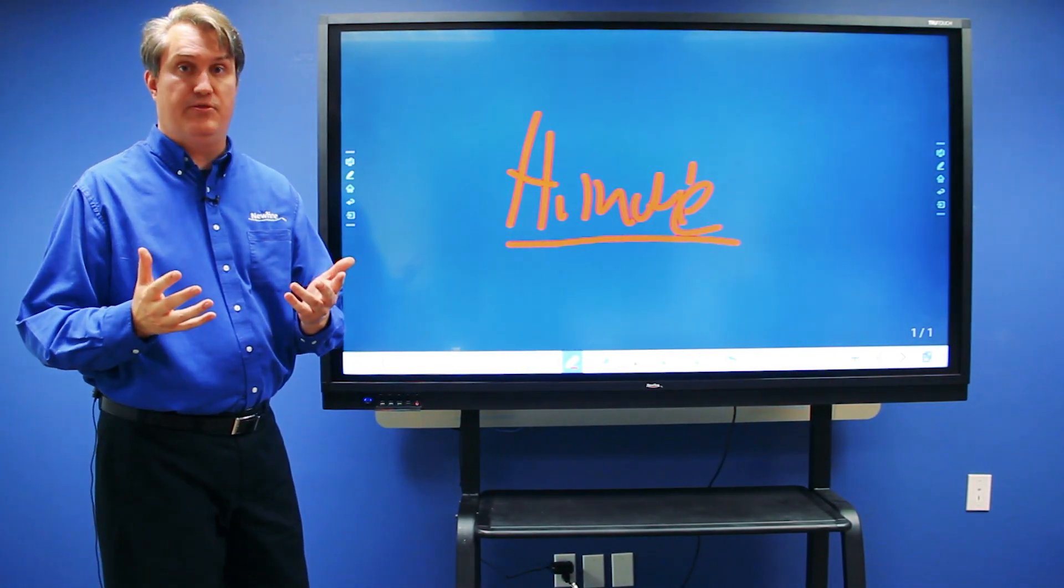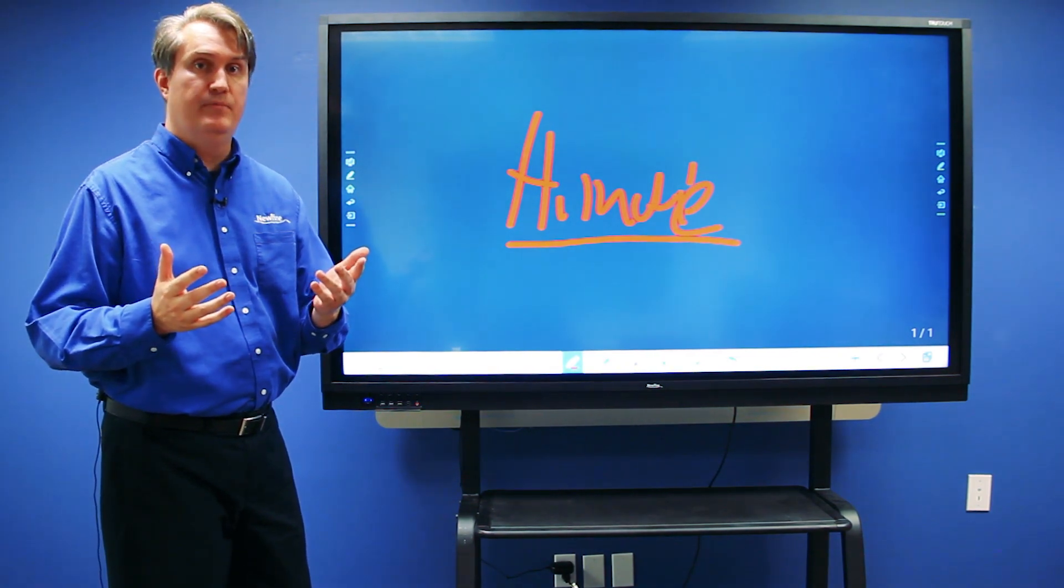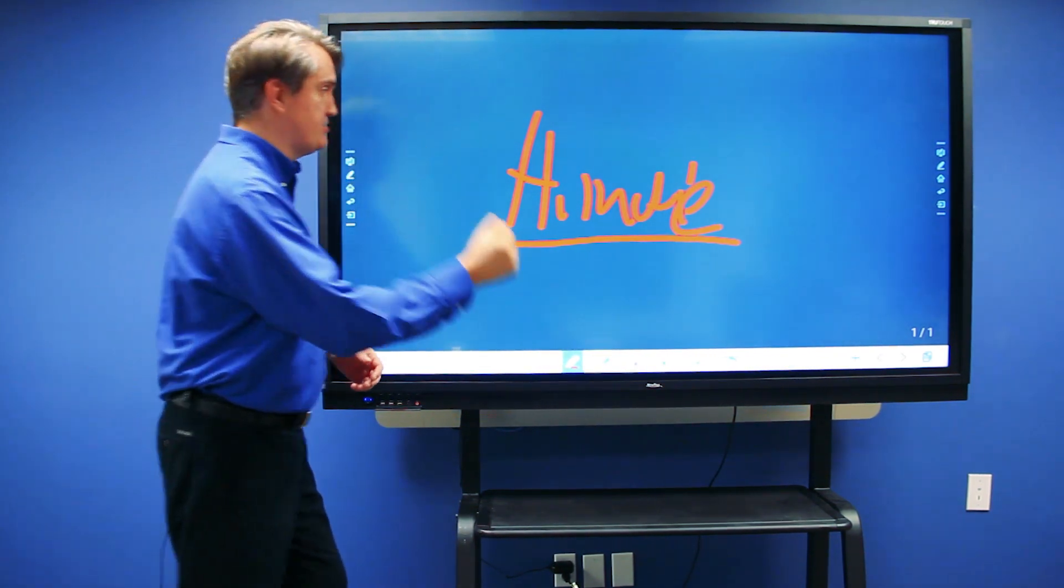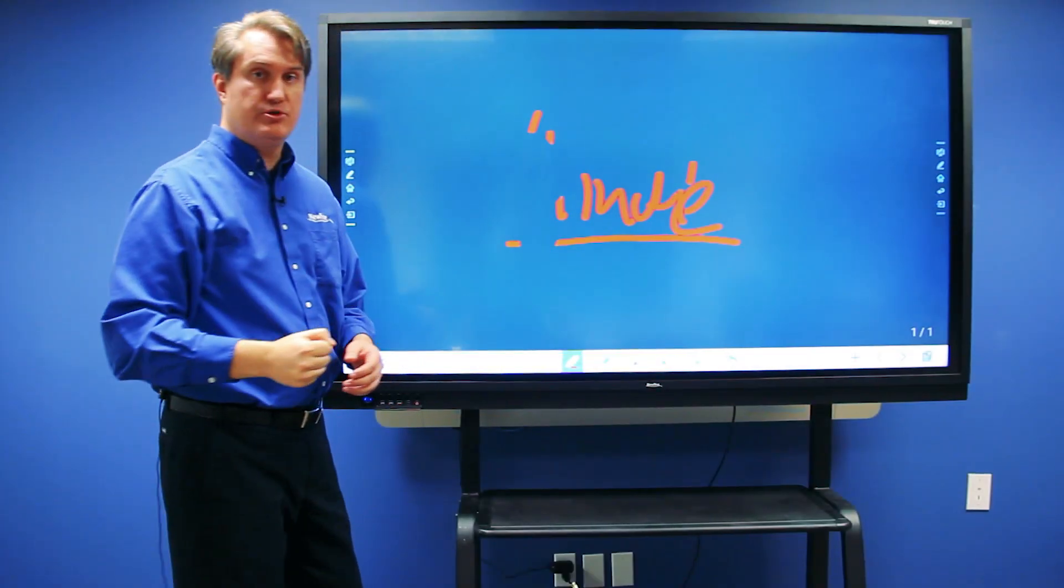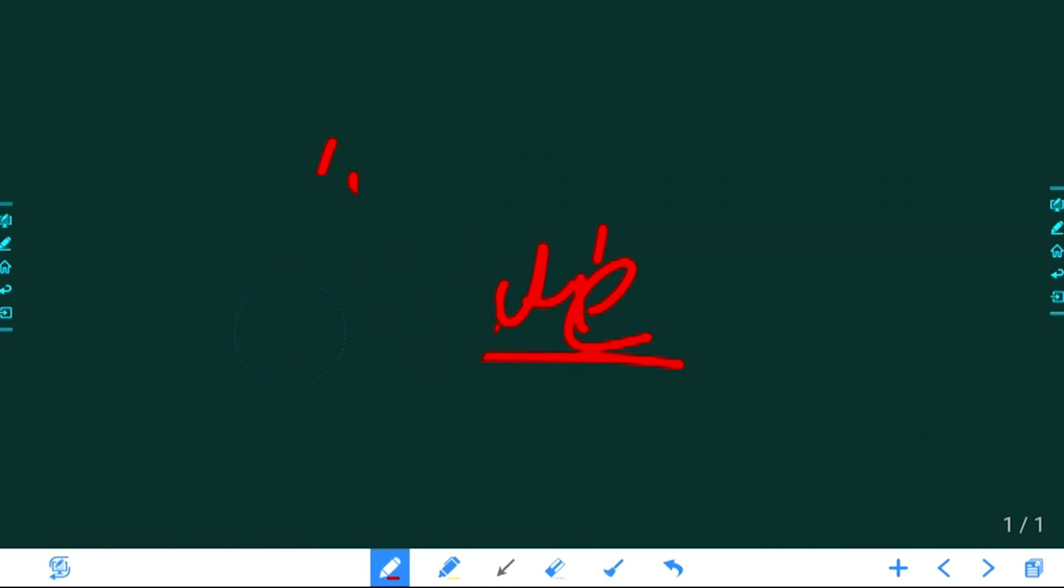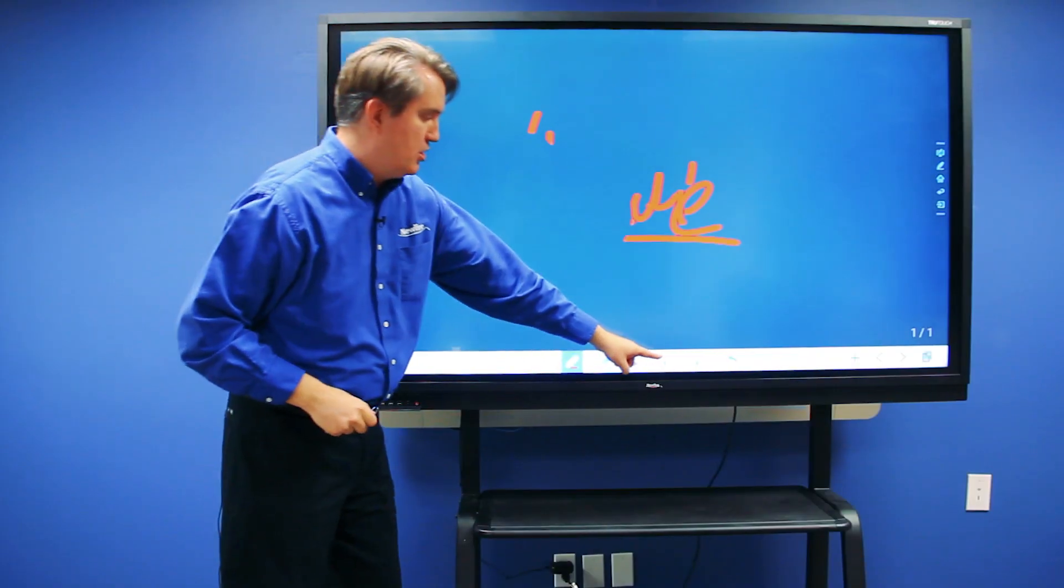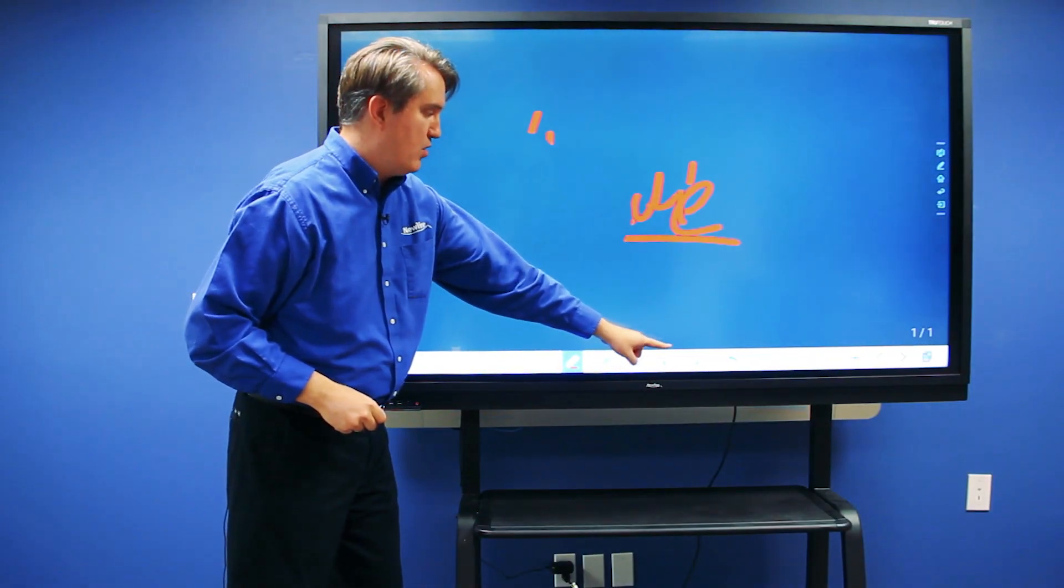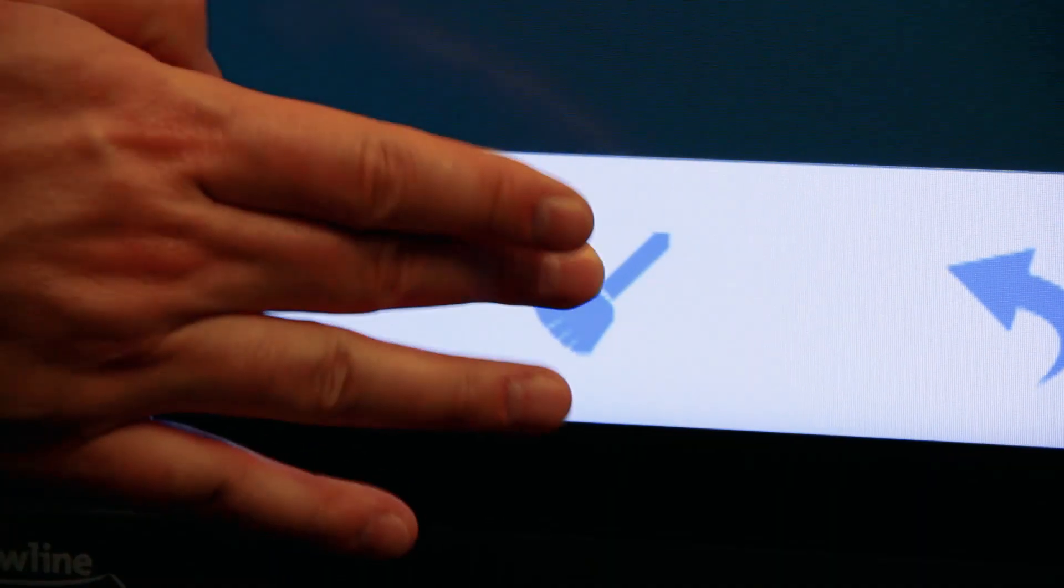You also have the ability to erase anything on the screen, and there are a couple of ways to do that. One way is to make a fist and use that as an eraser. You can also use five digits in a claw gesture, and that works well. There are also eraser tools as well as a clear screen tool—that's the broom button on the whiteboard toolbar.